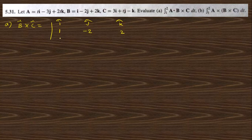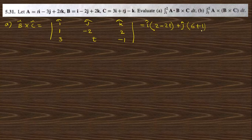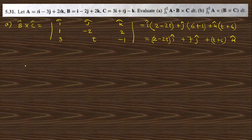Question 5.31: vectors a, b, c are given. First find b × c. Setting up the determinant with b = (1, −2, 2) and c = (3, t, −1). Expanding gives i cap(2 − 2t) + j cap(6 + 1) + k cap(t + 6), so b × c = (2 − 2t) i cap + 7 j cap + (t + 6) k cap.